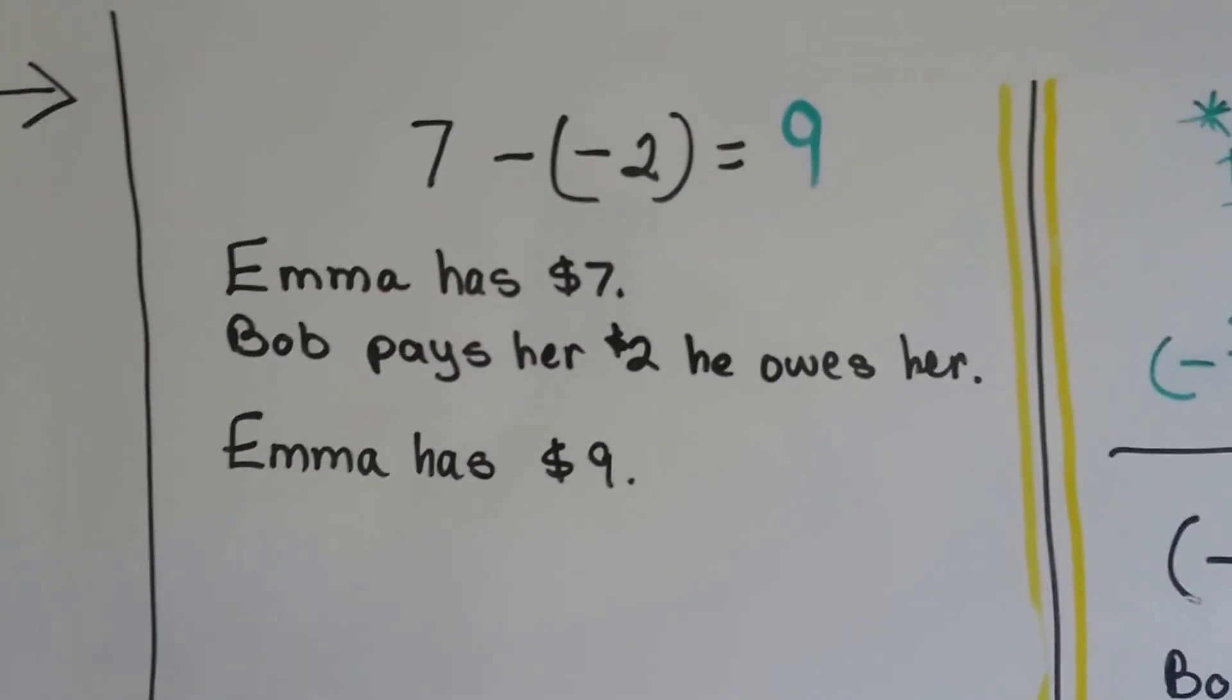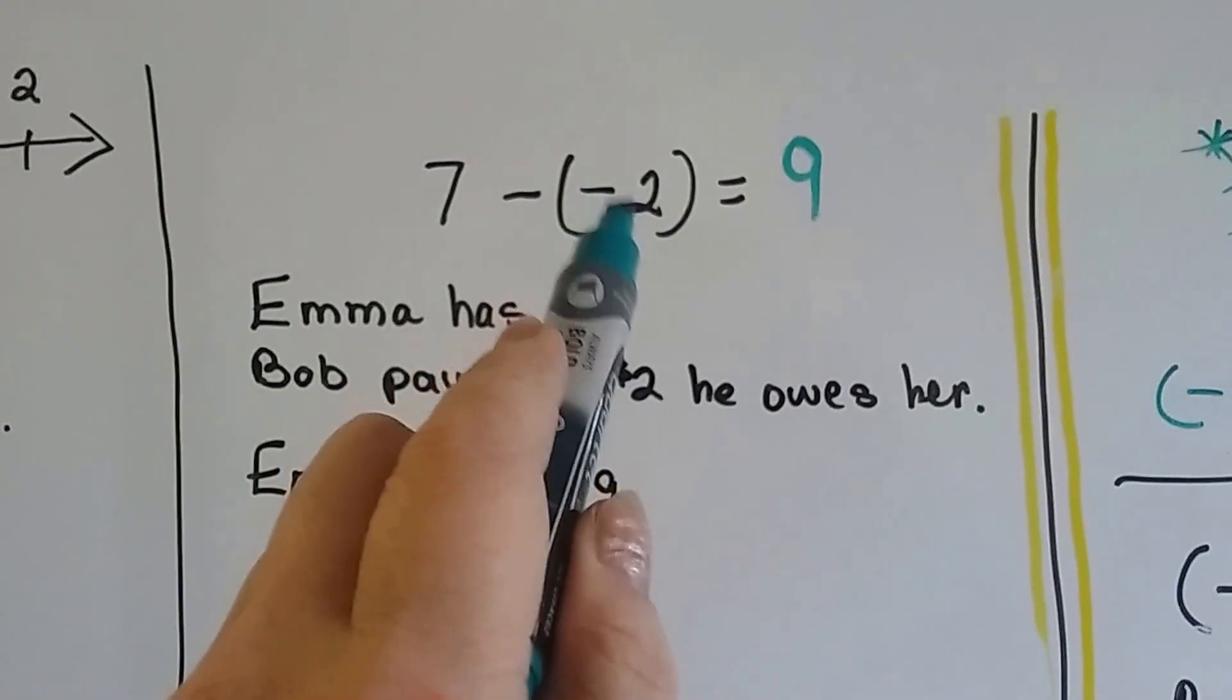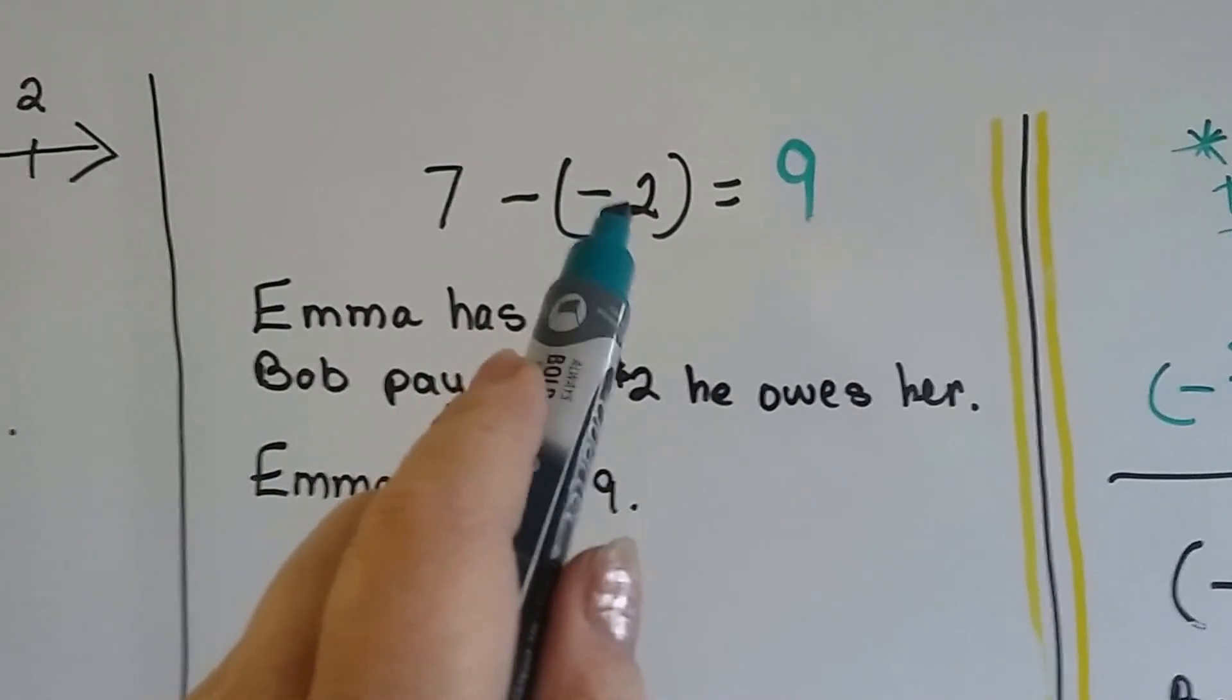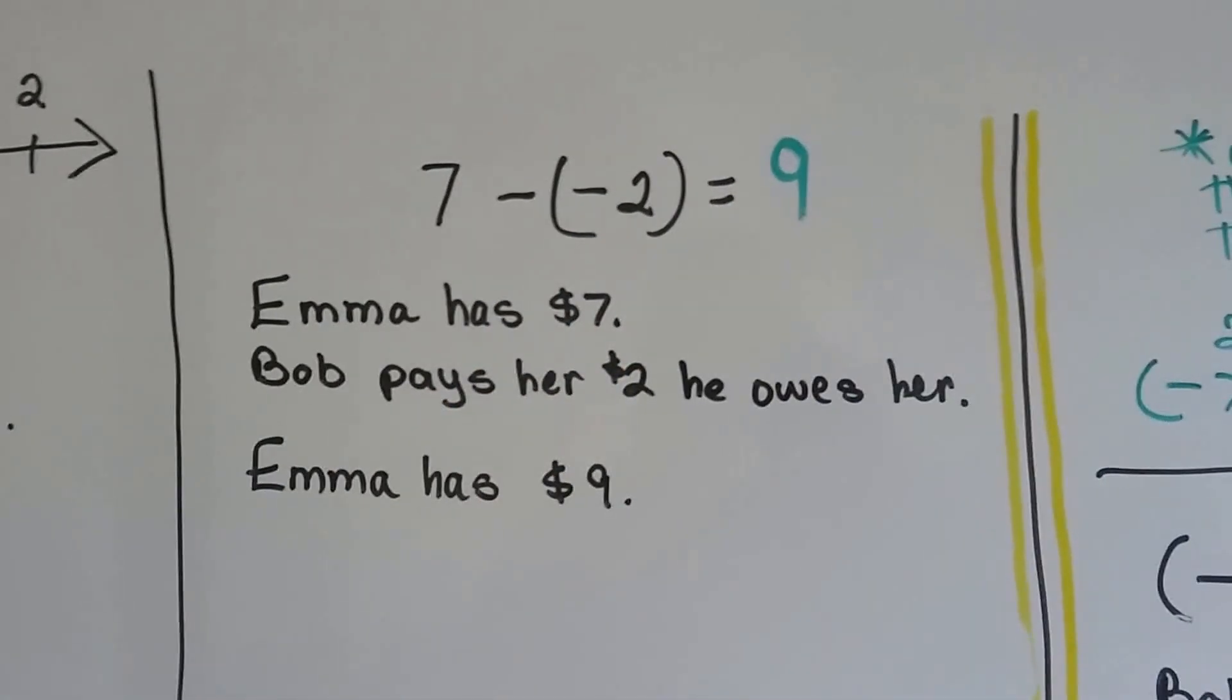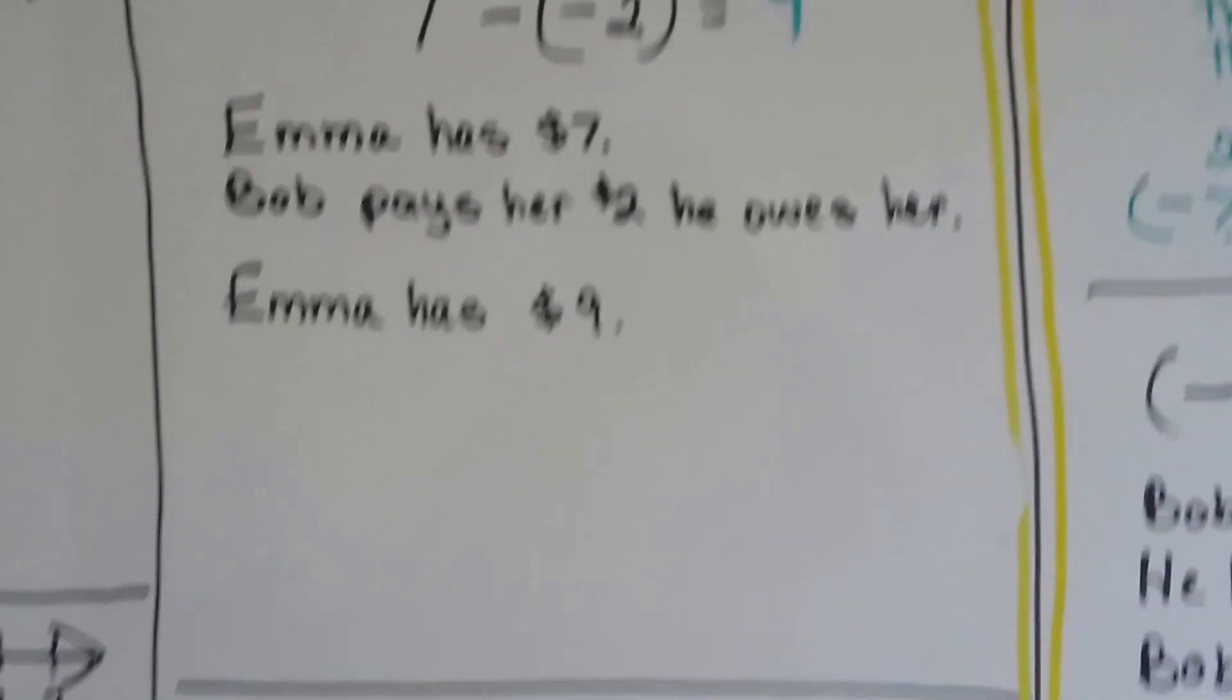Emma has $7 and Bob pays her $2 of his debt. Remember the negative number means debt. So, Emma's got $7 and Bob gives her $2 of the debt that he owes her. Now she's got $9.